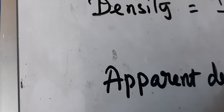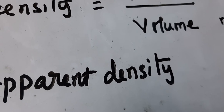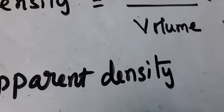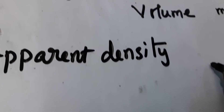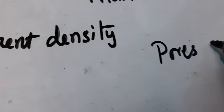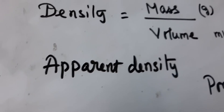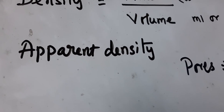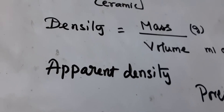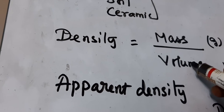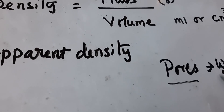Then what is apparent density? Apparent density is also the ratio of mass to volume, but here it includes the pores and the water present in the material. That is the difference between density and apparent density — apparent density is the relationship between mass and volume of the material including pores and water.